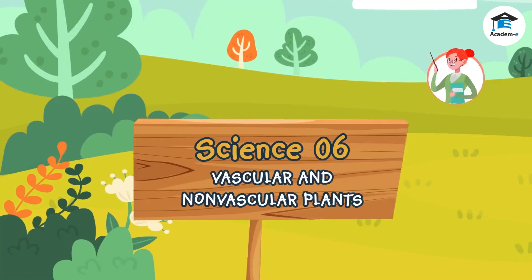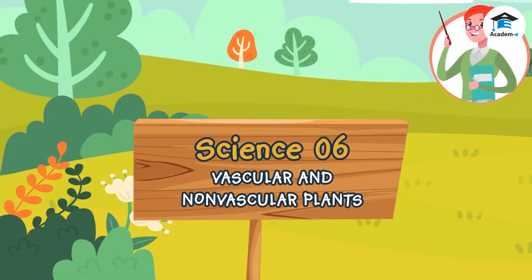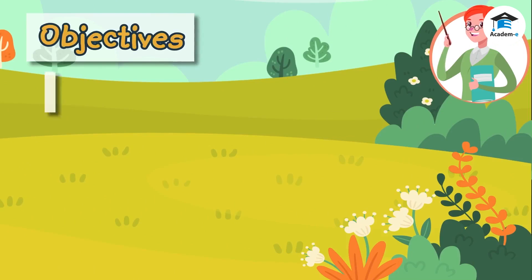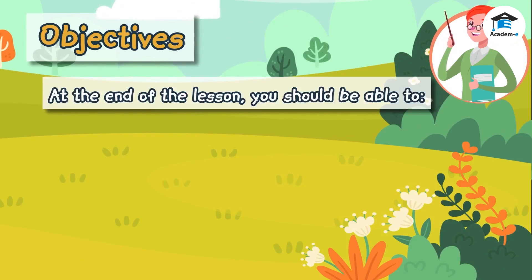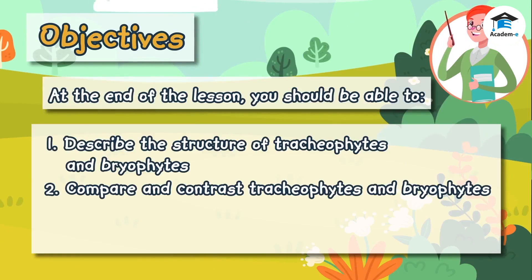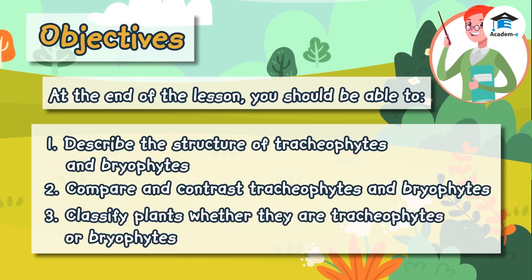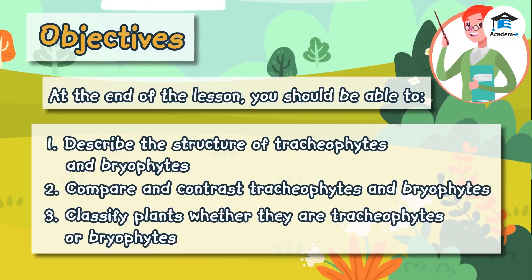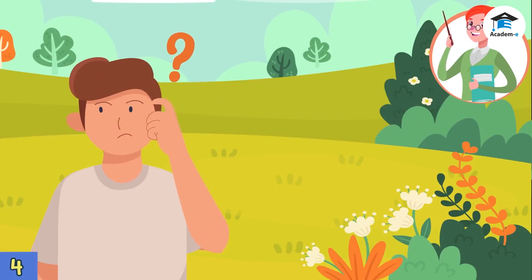Science 6: Vascular and Non-Vascular Plants. Objective: at the end of the lesson you should be able to one, describe the structure of tracheophytes and bryophytes; two, compare and contrast tracheophytes and bryophytes; three, classify plants whether they are tracheophytes or bryophytes.